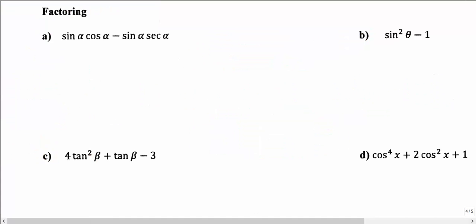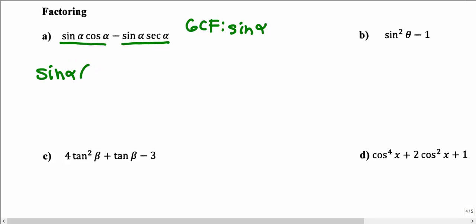Now we look at factoring, the opposite of multiplication. First we look for a common factor among all terms. We notice sine alpha is common to both terms. It's important that not only the trig function has the same name, but also the input must match — both must have alpha. So we factor out the GCF of sine alpha, leaving sine alpha times the quantity cosine alpha minus secant alpha.